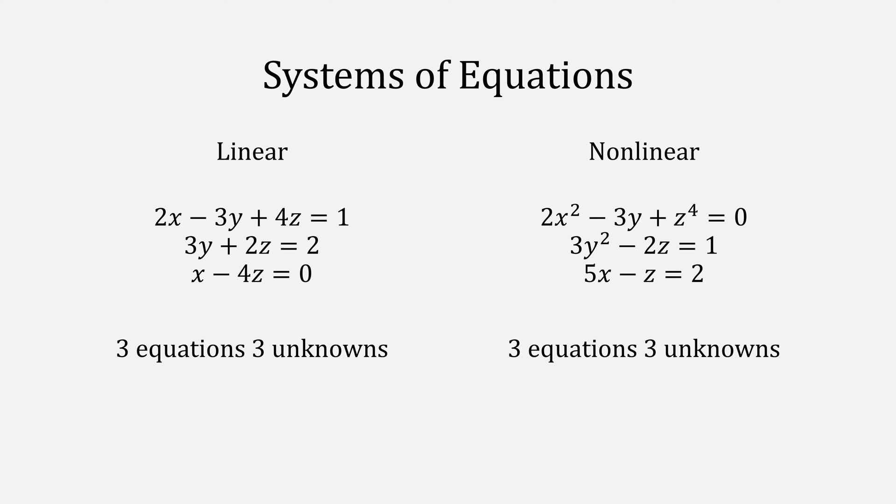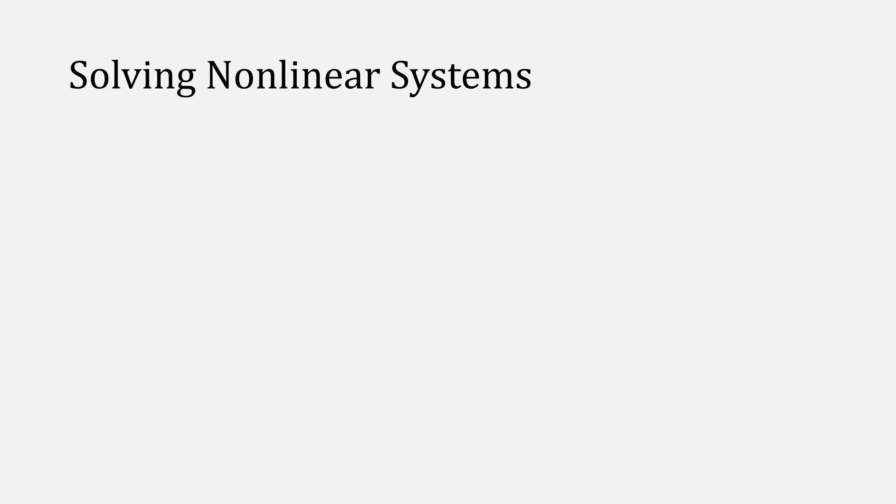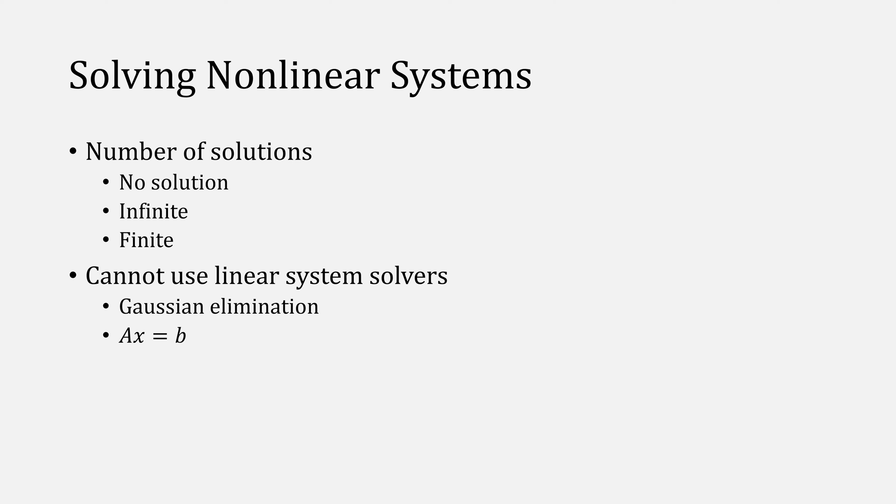For solving systems of equations, you should have at least as many equations as you do unknowns, and fixed-point iteration will actually work for both linear and nonlinear systems of equations. When it comes to solving a system, there could be no solution, an infinite number of solutions, or a finite number. And for nonlinear systems, you can't use things like Gaussian elimination to solve them. You could try to solve them algebraically, or iteratively using a numeric method like this video will show you how to do with fixed-point iteration.